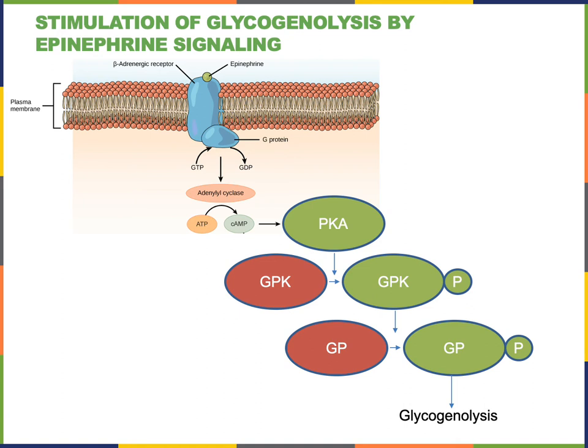Epinephrine will bind to the beta-adrenergic receptor, a G protein-linked receptor that is a cell surface receptor on the surface of cells in the liver. When the beta-adrenergic receptor is activated by epinephrine, it will change shape, activating the heterotrimeric G protein. The G protein will then stimulate the enzyme adenylyl cyclase to produce the second messenger cyclic AMP.